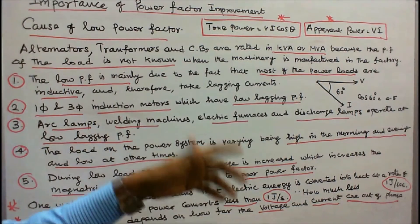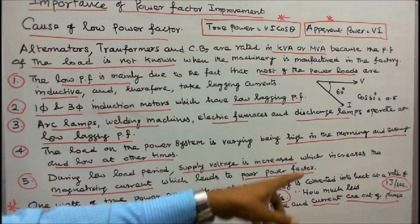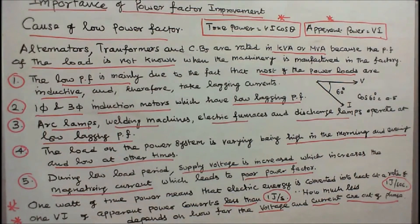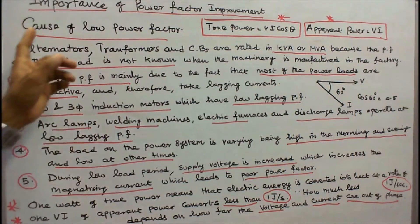Supply voltage is increased which increases the magnetizing current, which leads to poor power factor. These are all the causes of low power factor.